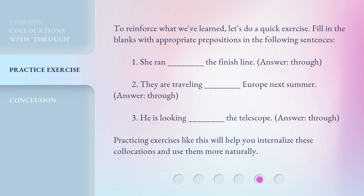3. He is looking blank the telescope. Answer: Through. Practicing exercises like this will help you internalize these collocations and use them more naturally.